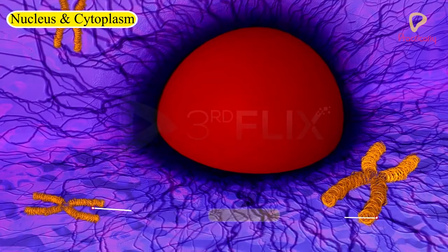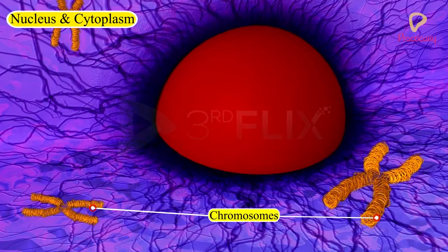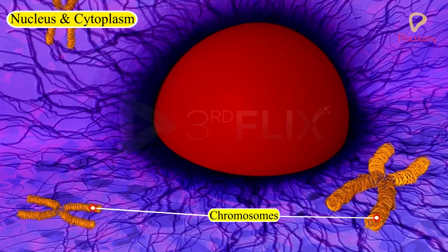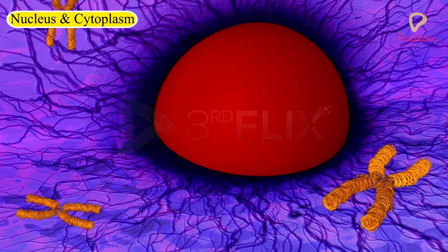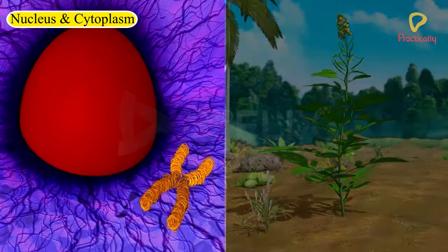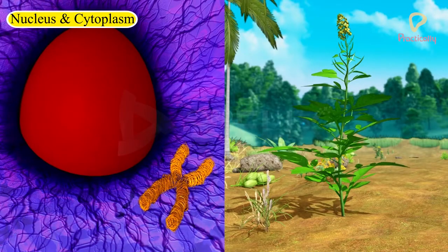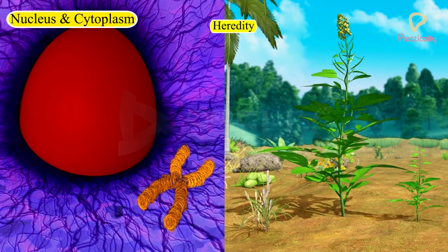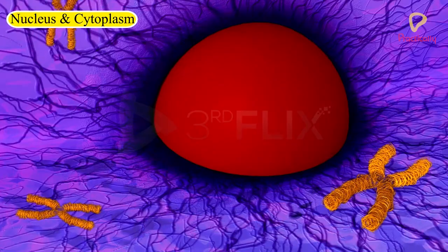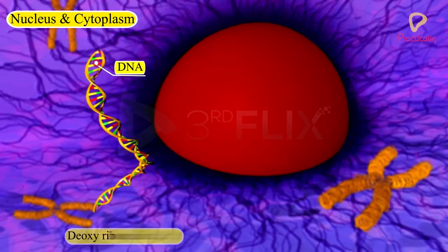The nucleus contains chromosomes which are visible as rod-shaped structures only when the cell is about to divide. Chromosomes contain information for inheritance of characters from parents to the next generation in the form of DNA — deoxyribonucleic acid — molecules.